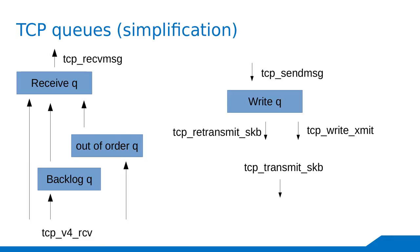Now about how packets flow through the queues. First a quick summary of how TCP queues work: on the receive side, TCP packets go either into the backlog queue if the socket is locked, or directly to the receive queue. There is also an out-of-order queue. From the receive queue, packets are copied to user space via TCP receive message. On the send side, TCP send message puts packets into the write queue, and then through write-xmit or retransmit-SKB the packet goes to TCP transmit SKB which pushes it to the IP layer.